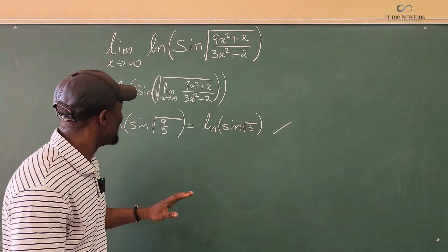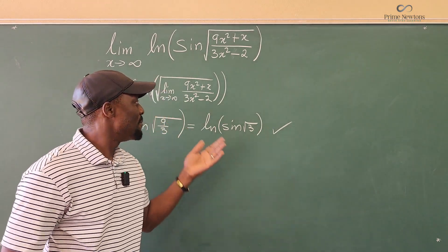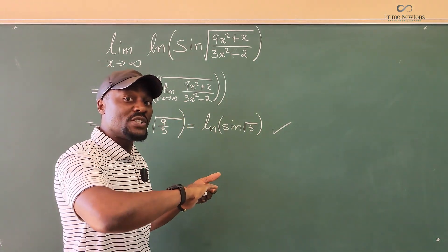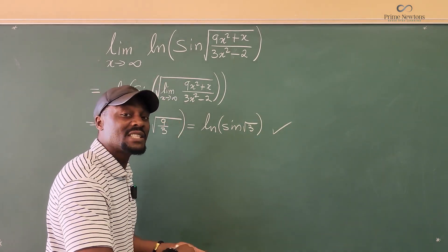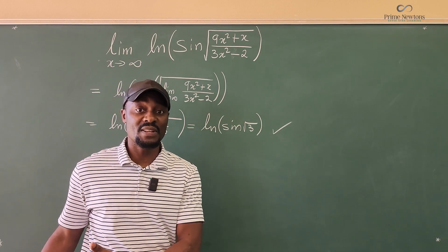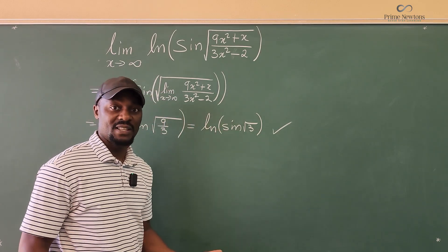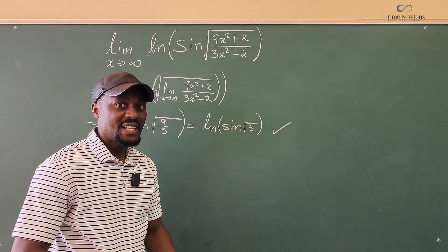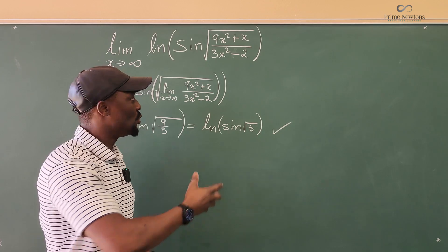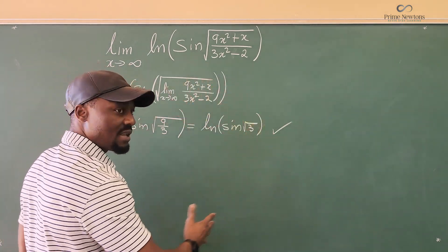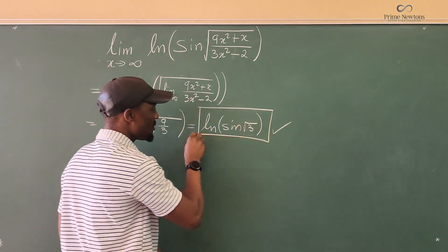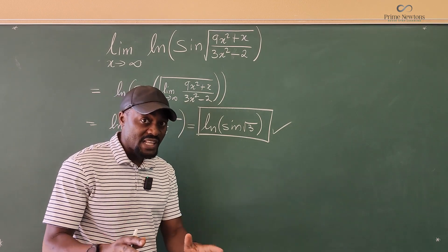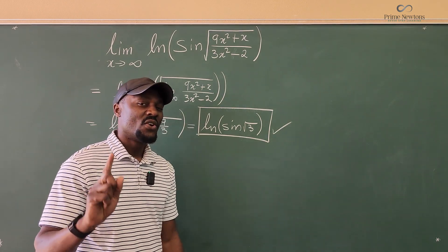Without any complicated calculation, the meaning of horizontal asymptote is the limit as x approaches infinity. So that's a five-second exercise. But if your teacher wants you to show the work, let's erase this. We know the answer is the natural log of sine of the square root of 3 — now let's see what we should do as good calculus students.